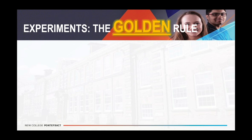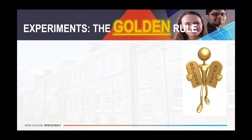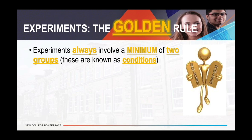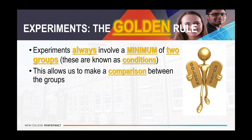I'm going to briefly introduce you to the golden rule of experiments. Experiments are the primary research method used by psychologists. Because we're now classed as a science, virtually everything that we do is experimental in the way that we conduct research. The golden rule of an experiment is that they always — and there are no exceptions — involve a minimum of two groups. Those two groups are known formally as conditions, and what we do is make a comparison between the groups. Normally you have what we call the experimental group and a control group.